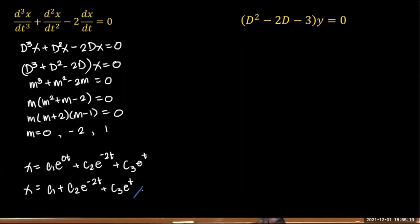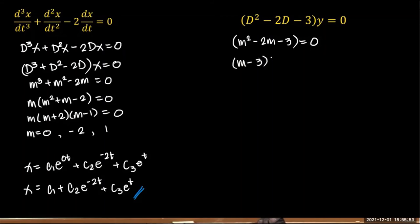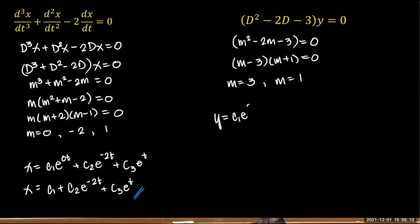The general solution is x equals c1·e^(0·t) plus c2·e^(negative 2t) plus c3·e^t. You can interchange the constants as long as all roots are represented. For another example already written in operator form, the auxiliary equation is (m minus 3)(m plus 1) equals zero, giving m equals 3 or m equals negative 1, which are real and distinct. Therefore the general solution is y equals c1·e^(3x) plus c2·e^(negative x), and the constants c1 and c2 can be interchanged.